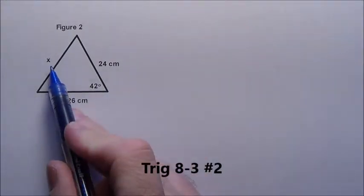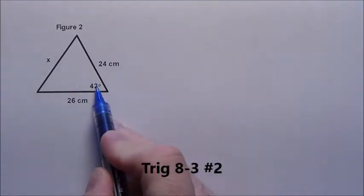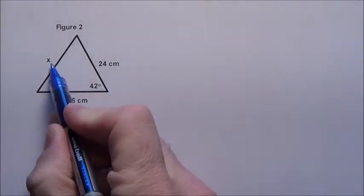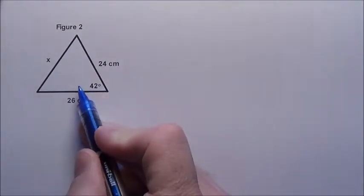All right, figure two. We're trying to figure out—we have two sides with an angle in between them, and we're trying to figure out this side across from it. Well, this is going to be the law of cosines.